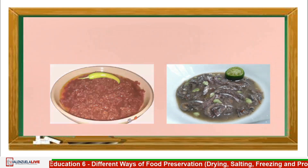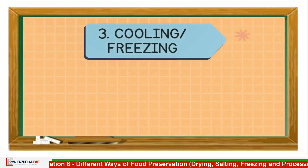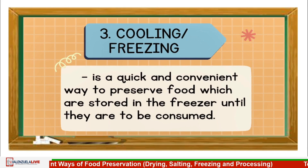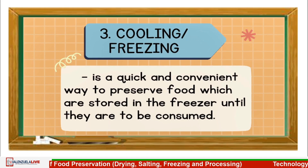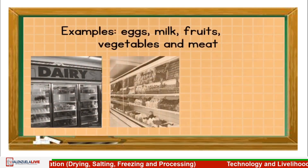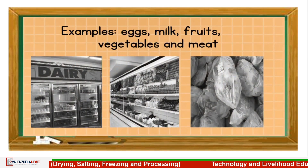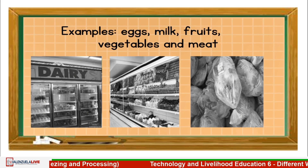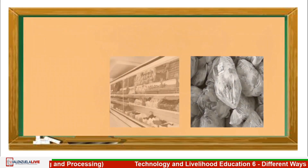The third one is cooling or freezing — a quick and convenient way to preserve food which is stored in the freezer until consumed. Examples: eggs, milk, fruits, vegetables, and meat.